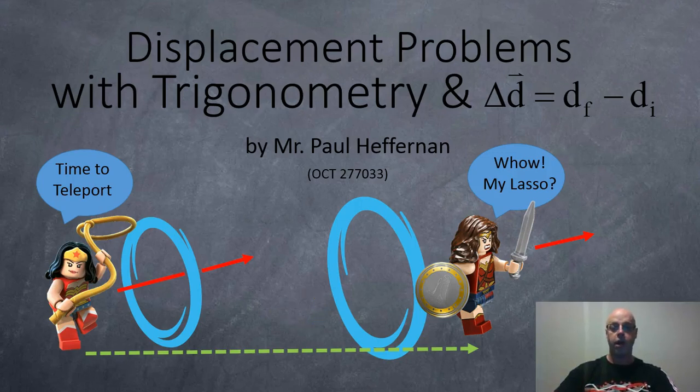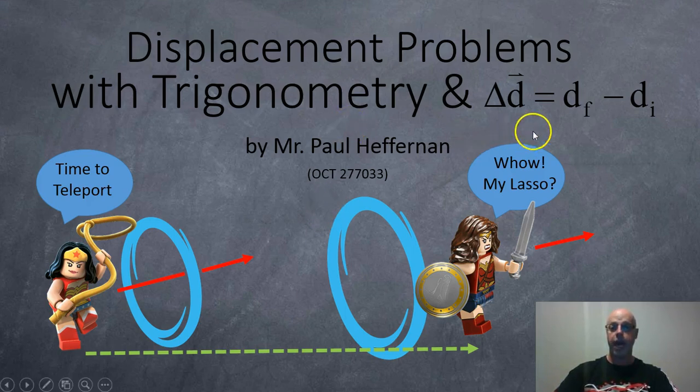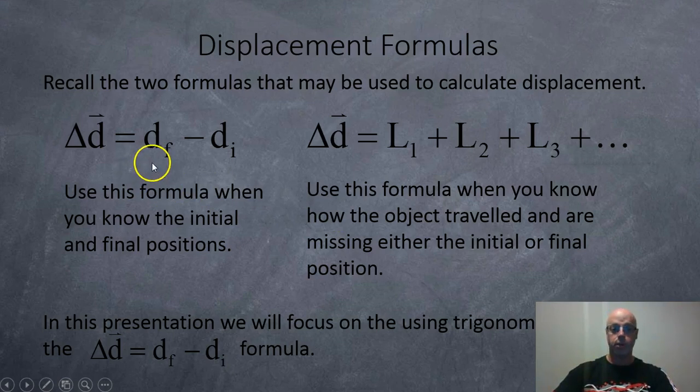Hi, Mr. Heffern here and here's a quick video on solving displacement in two dimensions using trigonometry and the traditional formula for displacement. So the traditional formula requires the use of the final and initial positions, so we'll focus on this formula instead of the other formula which uses the lengths of the path traveled.